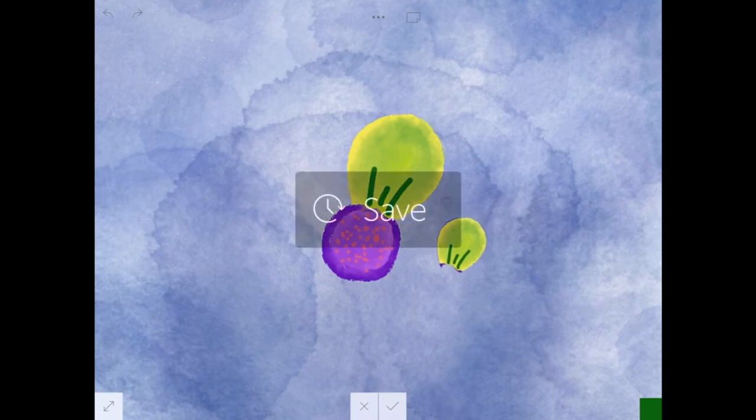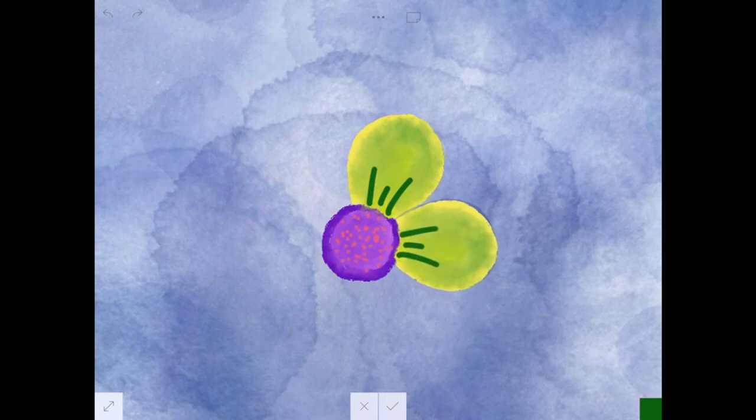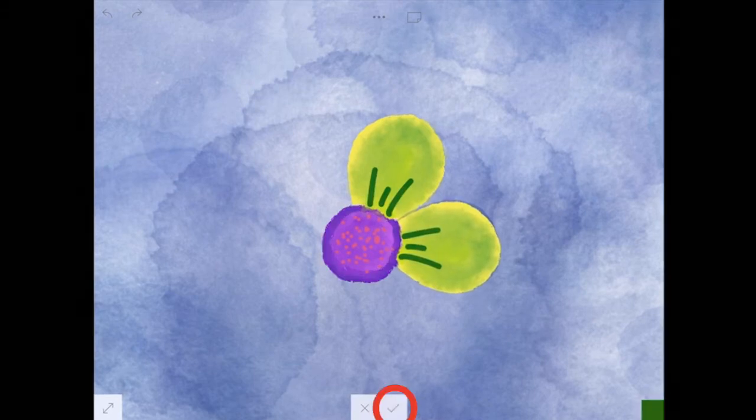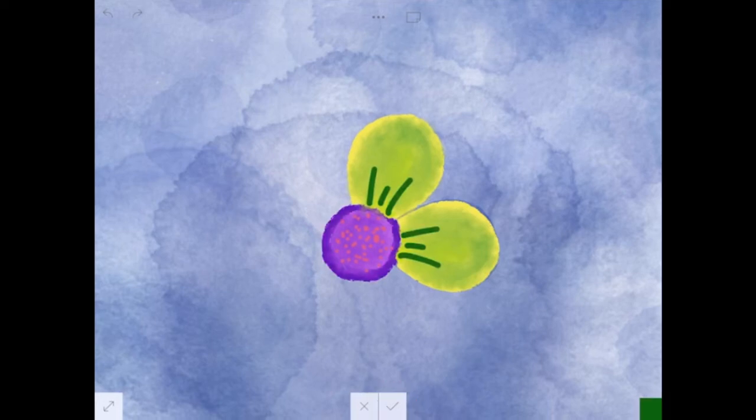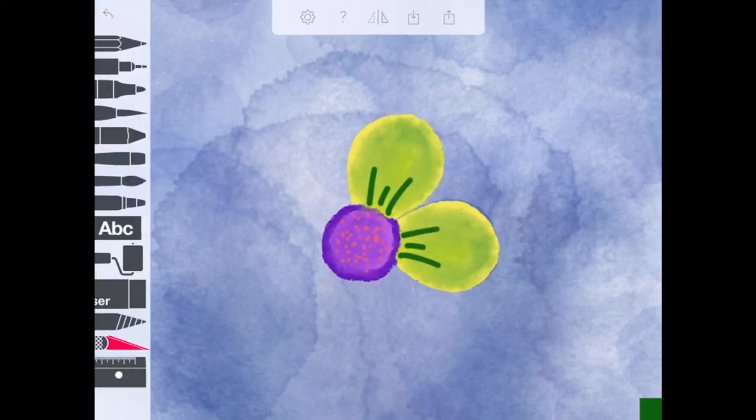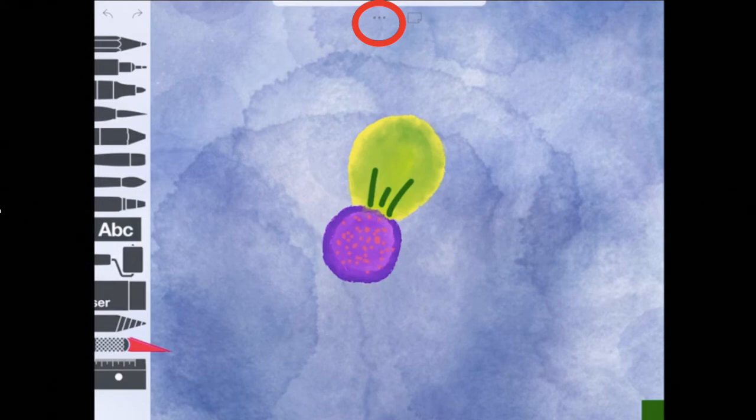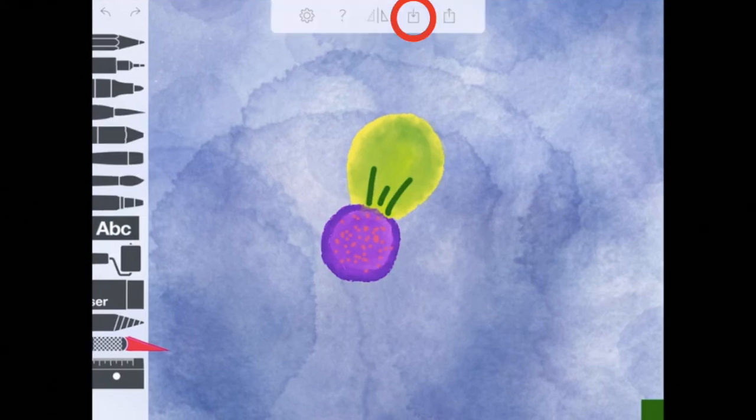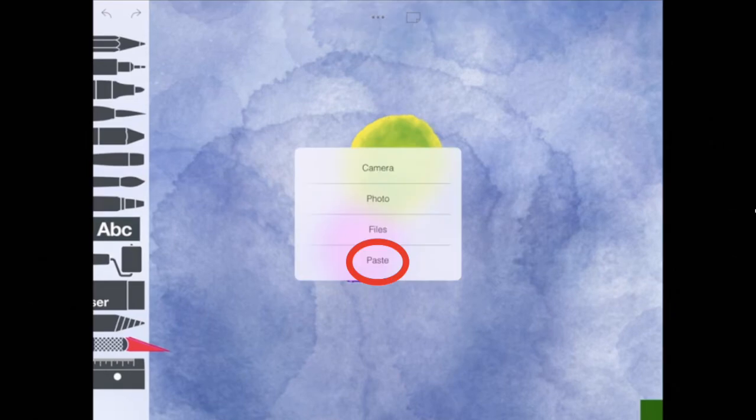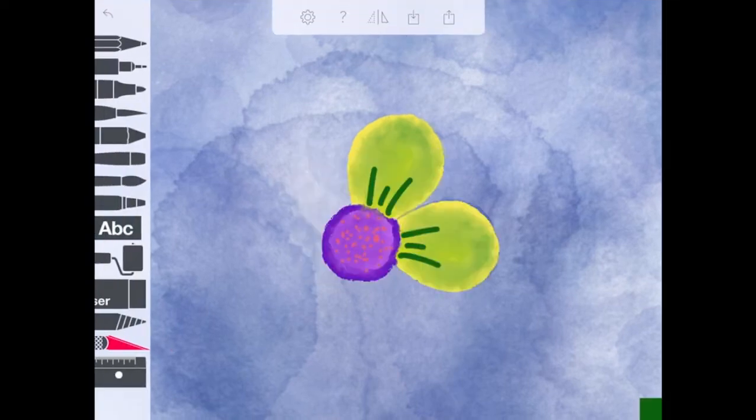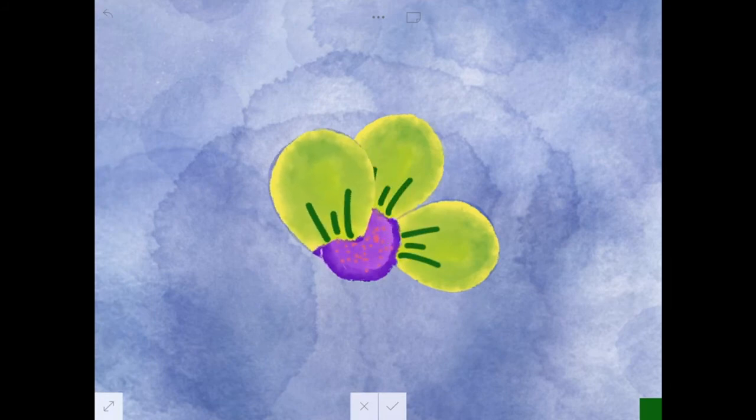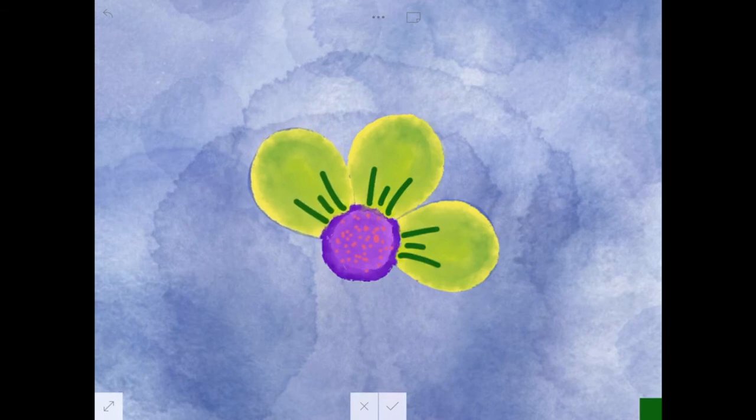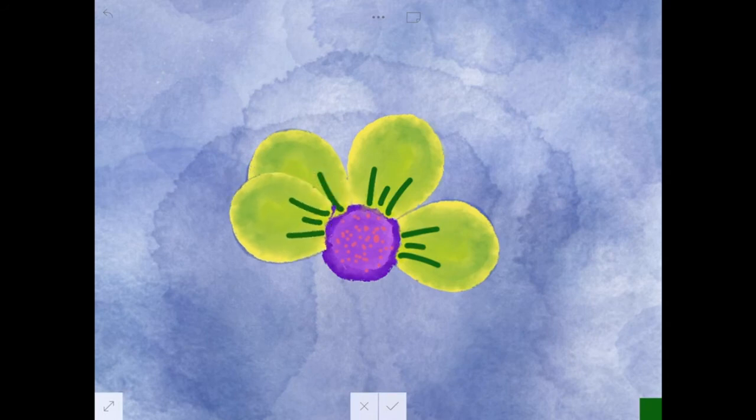This will paste another petal onto your composition. Now you can resize it and place it where you would like it to be. Then press the check mark in order for it to stay there. You're going to repeat that process now. Click the three dots, then click the arrow, then click paste. Resize that piece and press the check mark when you're ready. Continue to repeat that process until you have the entire flower.